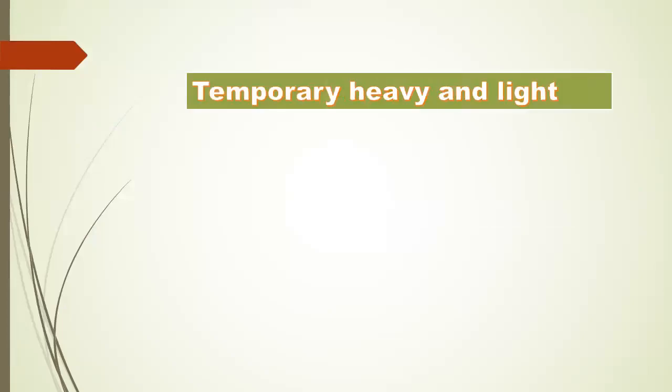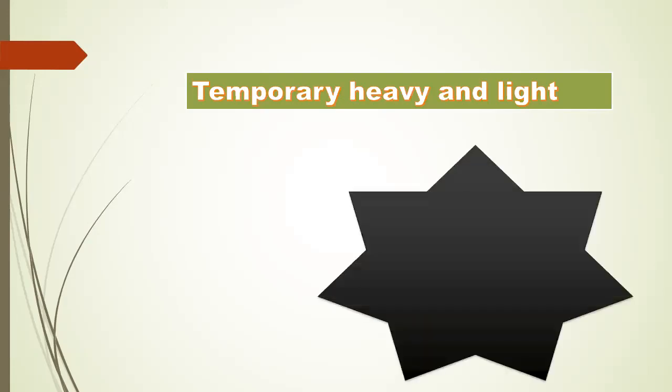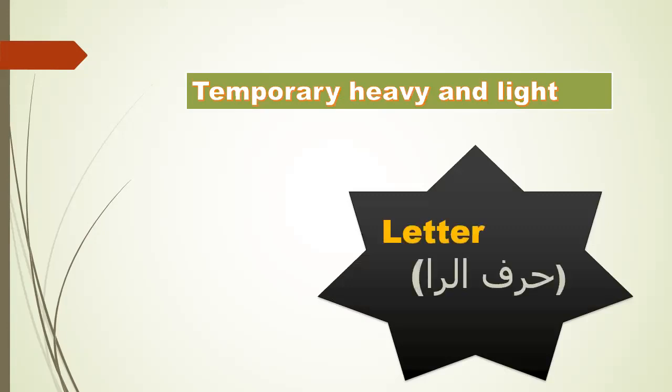Now we will study together the temporary heavy and light letters. Some letters are sometimes heavy and sometimes light. There are four types of these letters. The first is the letter ra. Ra is heavy — ra, ru — and ra is light — ri.